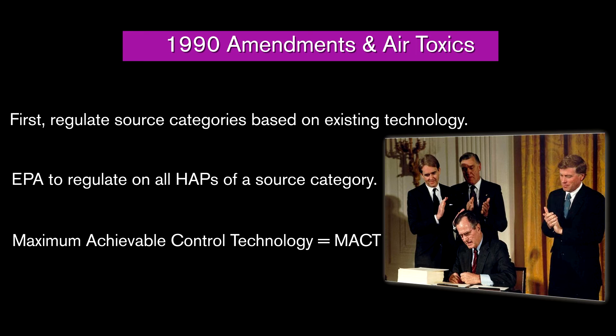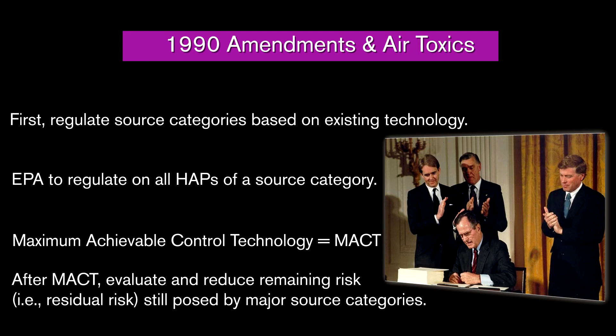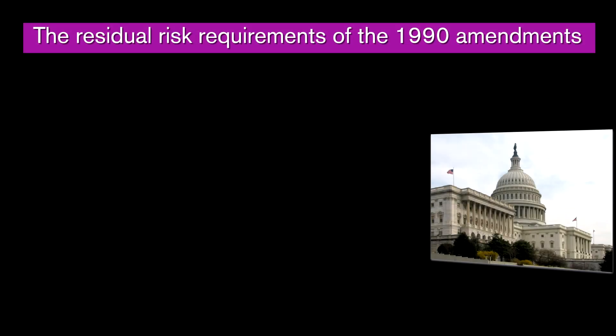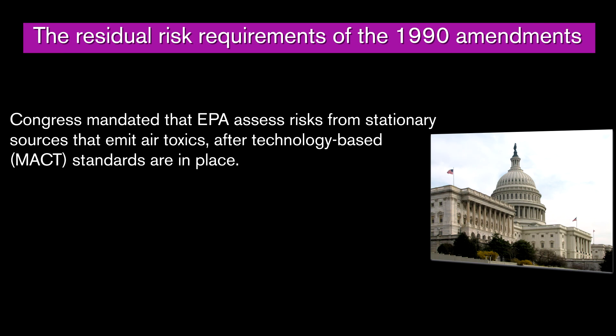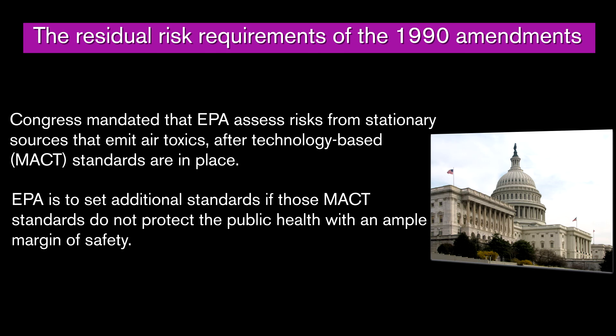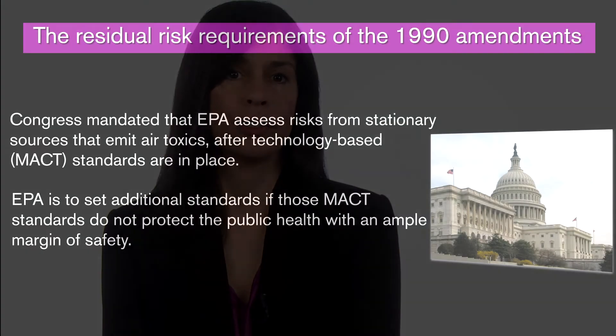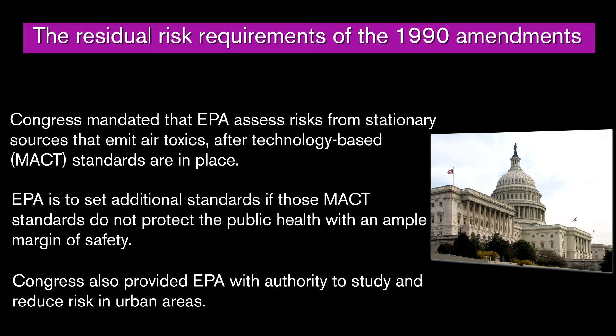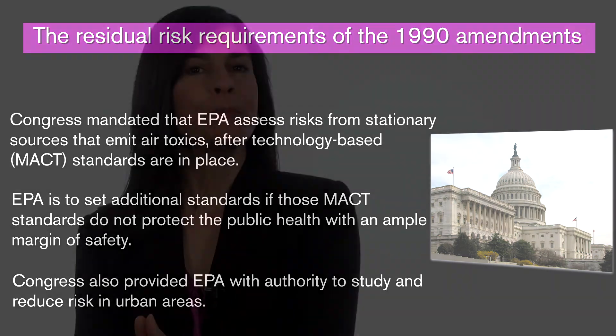Congress then said to revisit the source categories later and assess the risks remaining after the MACT standards were met, also called residual risks. For residual risks, Congress mandated that EPA assess risks from stationary sources that emit air toxics after technology-based MACT standards are in place. EPA is to set additional standards if those MACT standards do not protect the public health with an ample margin of safety, and also to set additional standards if necessary to prevent adverse environmental effects. In addition to further regulating stationary sources, Congress also provided EPA with authority to study and reduce risks in urban areas. It is because of these provisions that today we look at air toxics from a risk-based perspective.